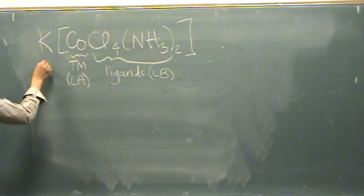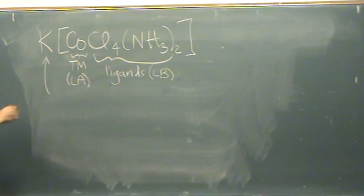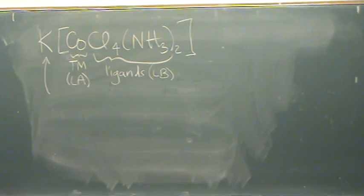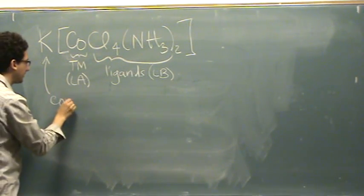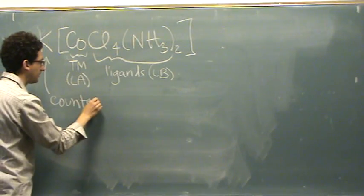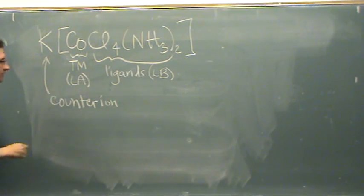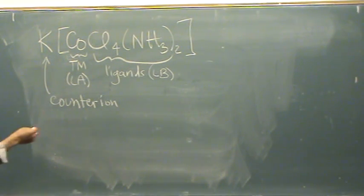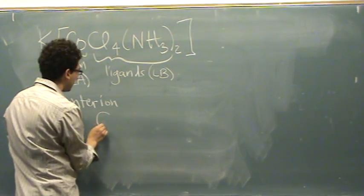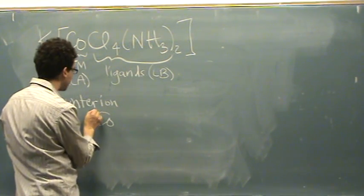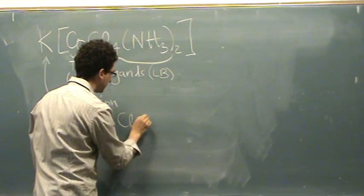This thing here, which is usually outside of the brackets, is called the counter ion. It doesn't do much besides balancing the charge of the overall complex. So for example, this transition metal complex as an ion would just be this.